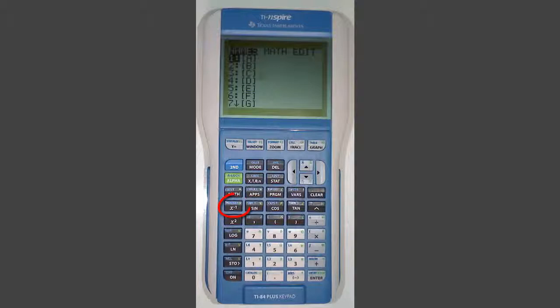Then press 2nd, X to the negative 1 or matrix in blue. Tap over to the Edit menu using the arrow keys and select a blank matrix template. Press Enter.